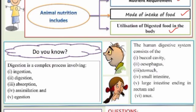Do you know what digestion is? It is a complex process — five things are involved: ingestion, digestion, absorption, assimilation, and egestion.